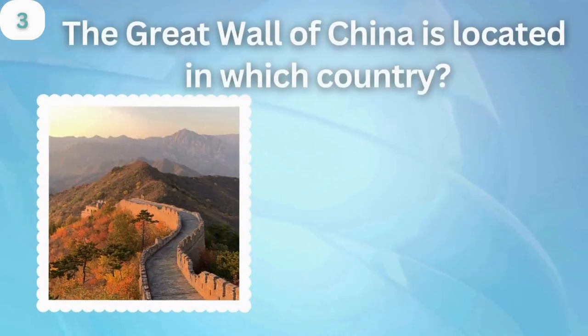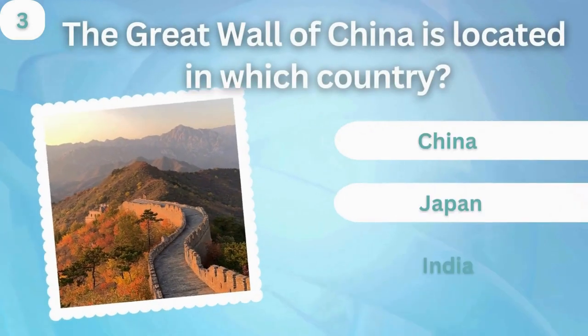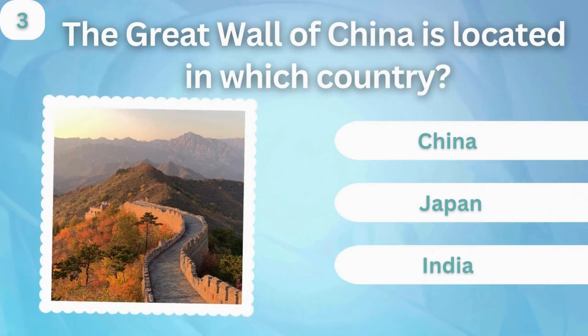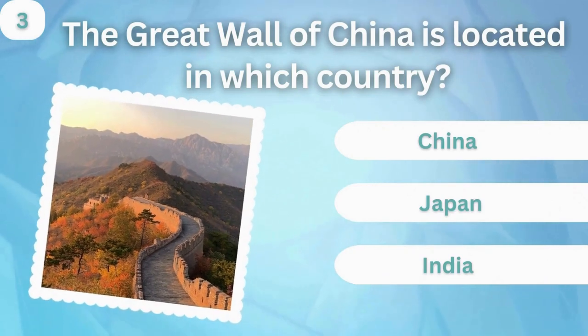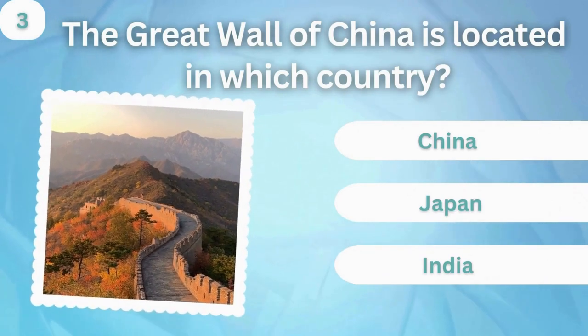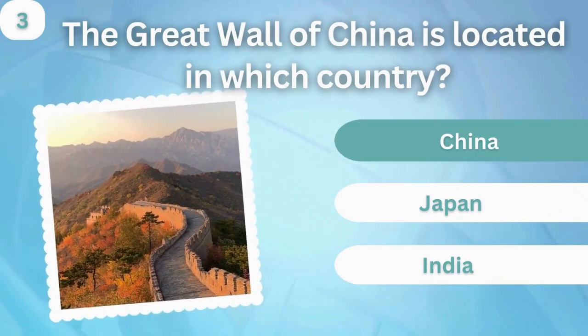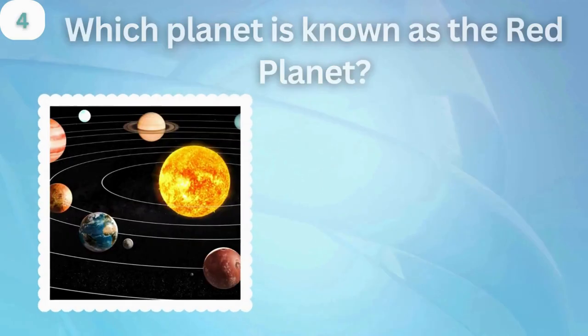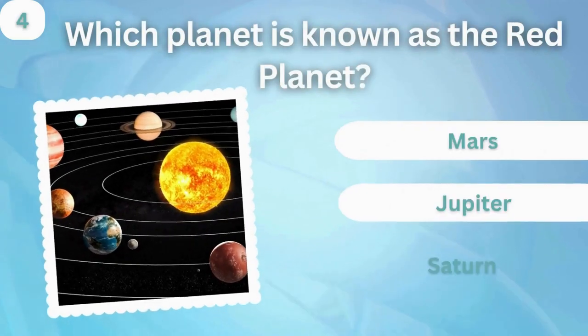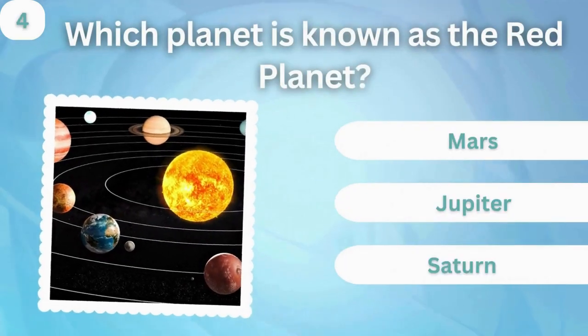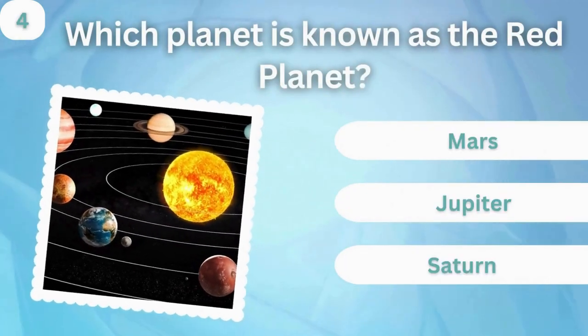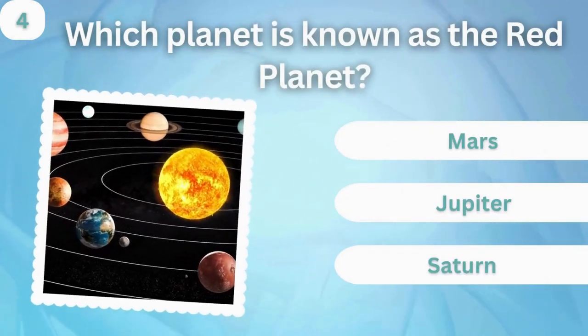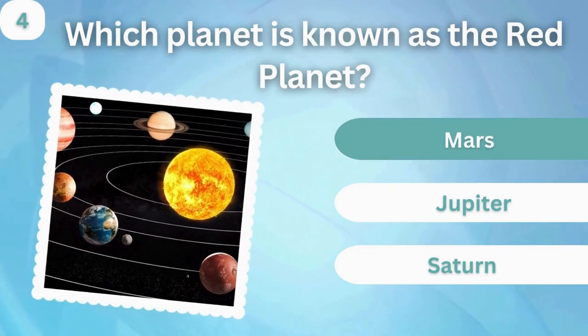The Great Wall of China is located in which country? China, Japan, or India? China. Which planet is known as the Red Planet? Mars, Jupiter, or Saturn? Mars.